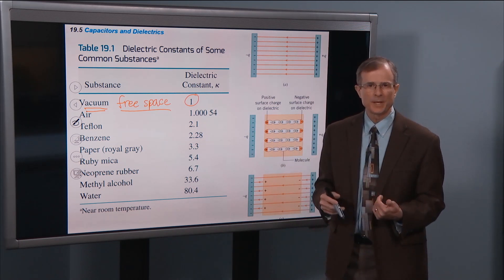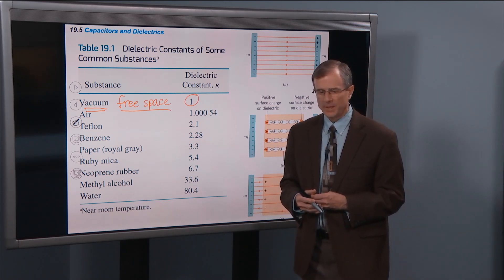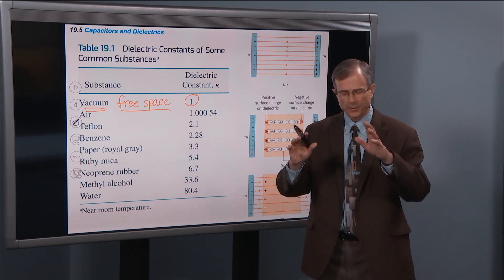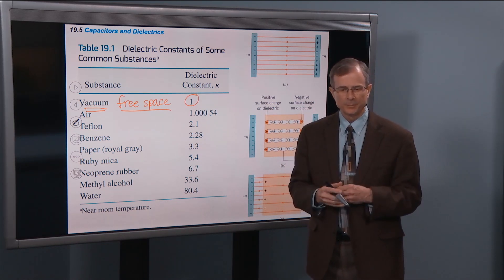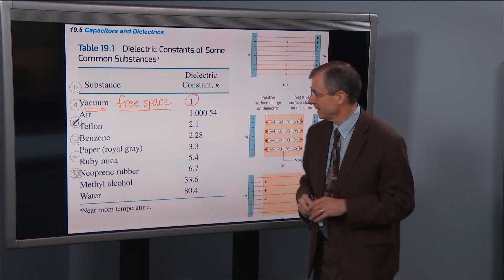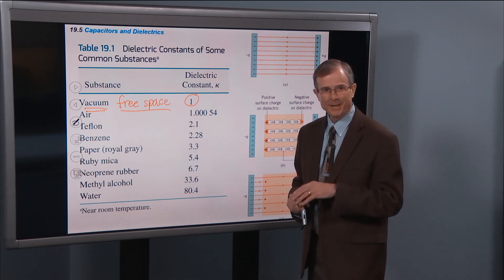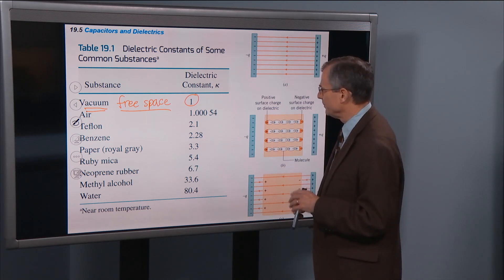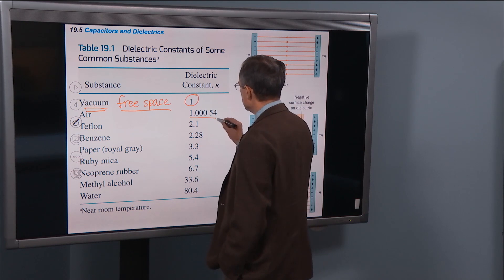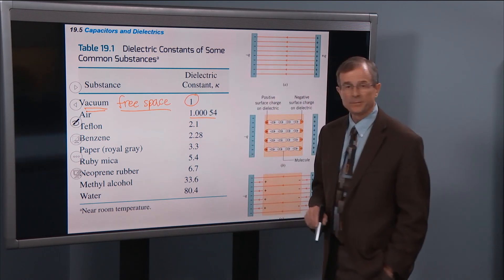You can get a close approximation to a vacuum here on Earth in what's known as ultra-high vacuum where you evacuate the air from a space. And we had a lab at West Virginia where a door on the front of the lab to the ultra-high vacuum said in ultra-high vacuum no one can hear you scream. It's because sound does not propagate in a vacuum.